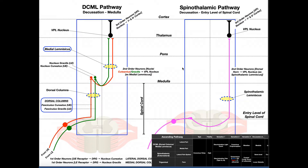In this video, and actually the next two, we're going to be discussing some ascending pathways within the nervous system. An ascending pathway is a pathway that relays sensory information from the periphery — the legs, arms, anywhere — into the central nervous system and up to the brain for interpretation. In videos after these, we'll look at descending pathways, which are motor pathways that go from the brain, really the cortex, down the central nervous system and out to the periphery. So they go in opposite directions.